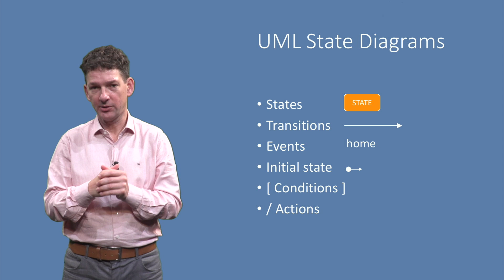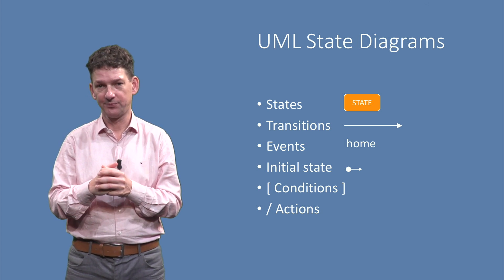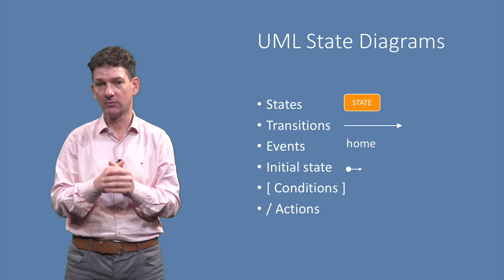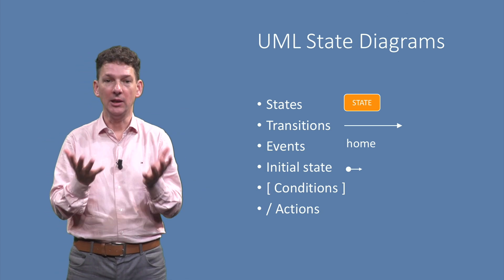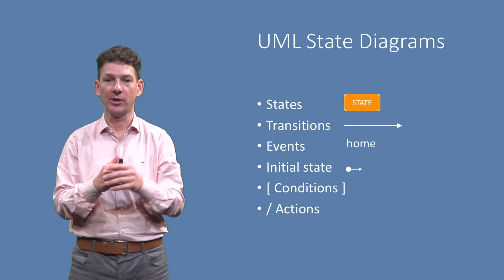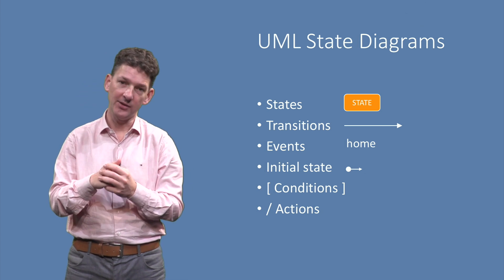With this, we have covered the basics of modeling behavior with UML state diagrams. We have seen states, orange boxes, transitions, arrows, events, labels on arrows, and initial states, the small pointy arrows, as well as conditions and actions.